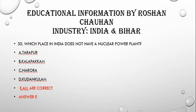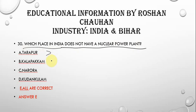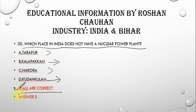The next question is: which place in India does not have a nuclear power plant? Looking at the options — Tarapur, Kalpakkam, Naroda, and Kudankulam — all of these already have nuclear power plants established. So the correct answer is option E, all are correct, meaning all listed places have nuclear power plants.